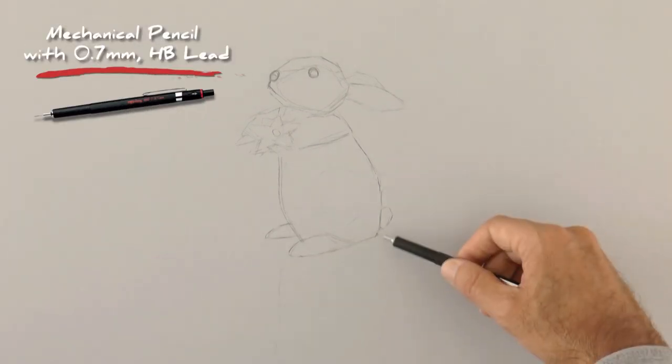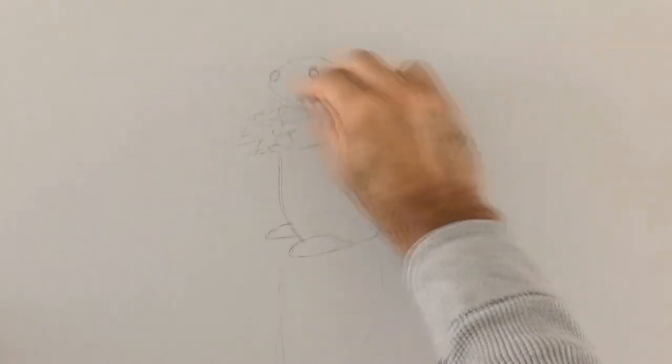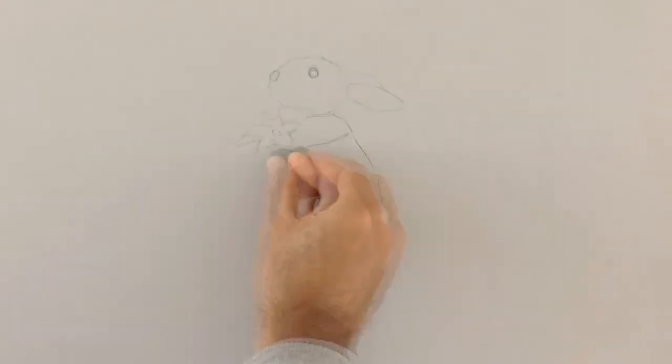The shadow will be down here. And then I lighten some of the lines with the kneaded eraser, so that they are not in my way.